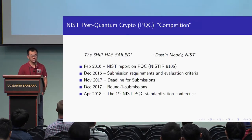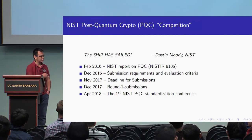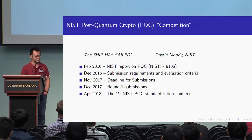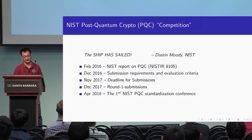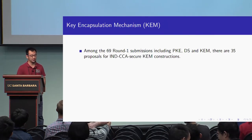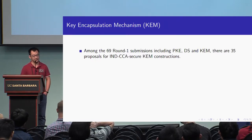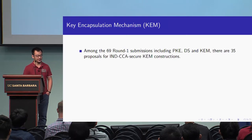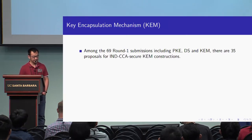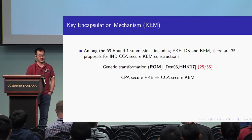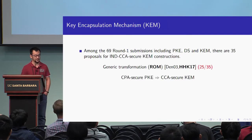NIST has launched a post-quantum cryptography competition, and this is the timeline. In 2017, NIST completed the first-round submissions. Around the first round, there are 69 submissions, including public key encryption (PKE), digital signature, and KEM. Among these, the majority — 75 submissions — use generic transformations in the random oracle model to achieve CCA-secure KEM.